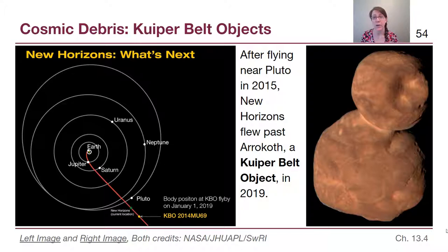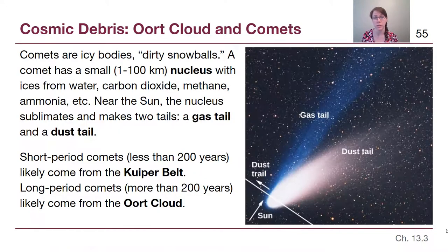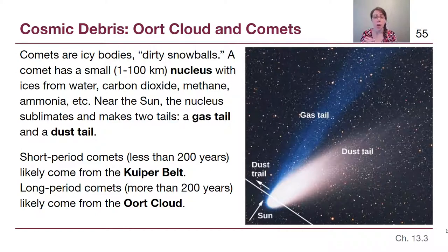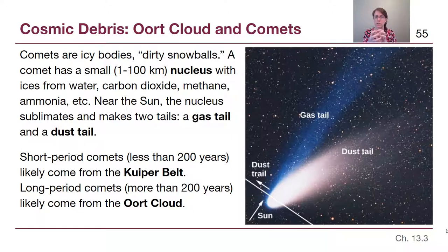Objects with orbits that bring them into the inner solar system are comets — the same kind of material as in the Kuiper Belt, but also from a region even farther away. Comets are mostly made of ices, sometimes called dirty snowballs, and they have a central nucleus — a central solid region.